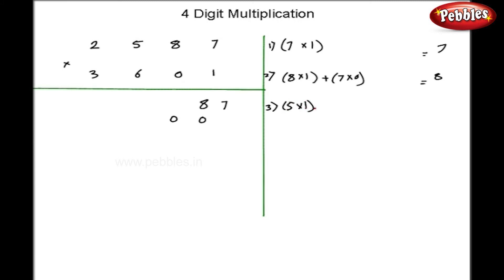Now, third step, 5 into 1 plus 6 into 7 plus 8 into 0. Now, whenever 0 is there, you need not calculate. So, my answer here is 47. So, I write 4 and 7.